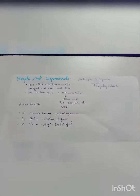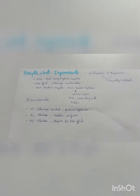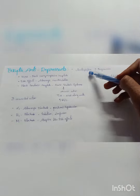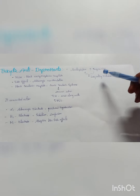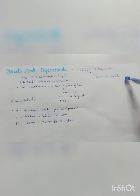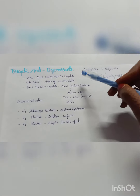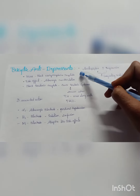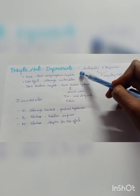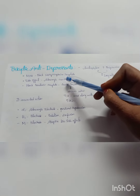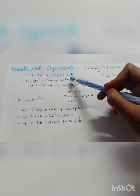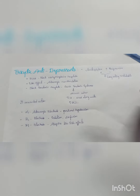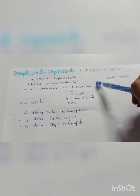Amitriptyline and imipramine are long-acting metabolites. The mechanism of action of tricyclic antidepressants: they block the norepinephrine reuptake — side effects include adrenergic overstimulation. They also block the serotonin reuptake and can cause serotonin syndrome.